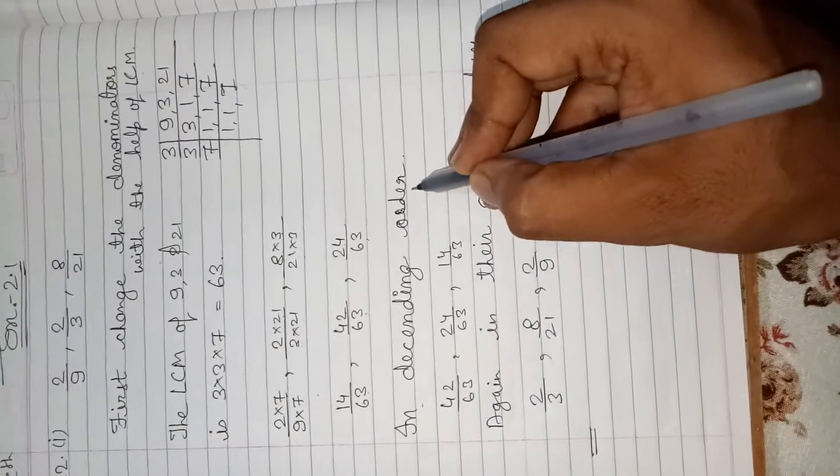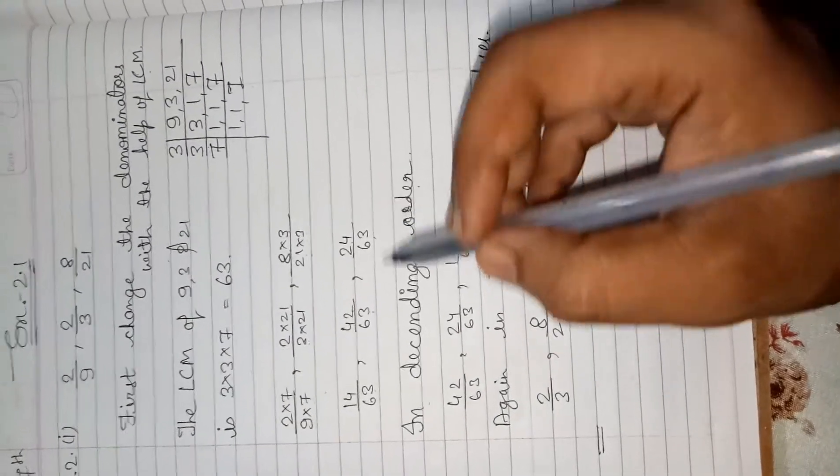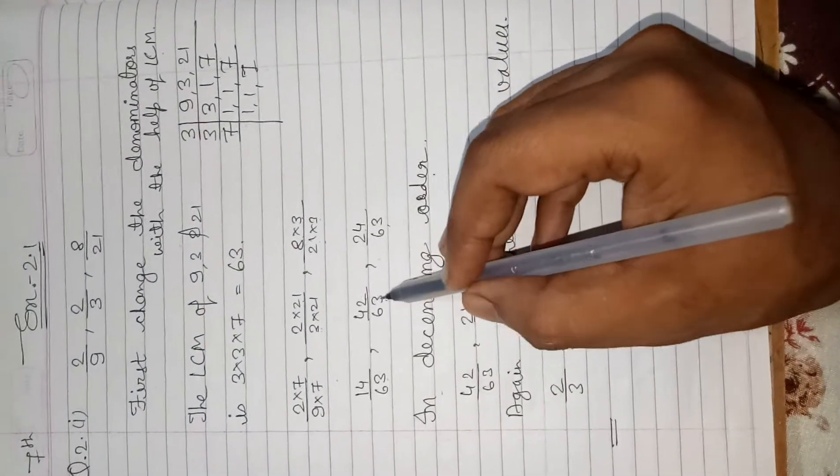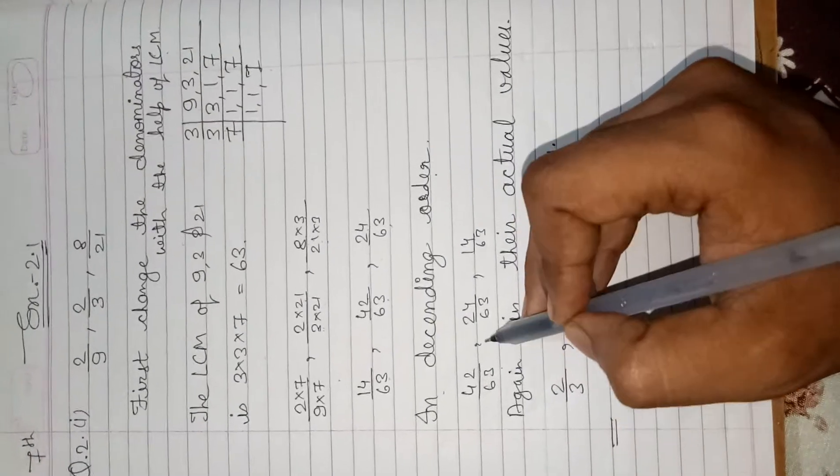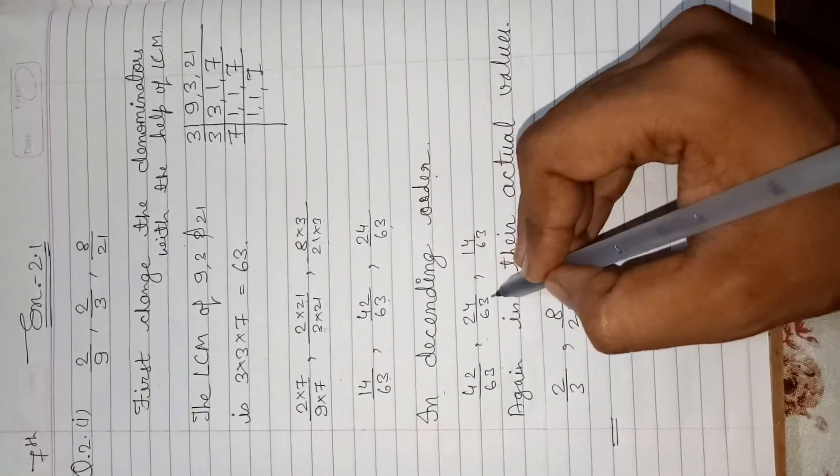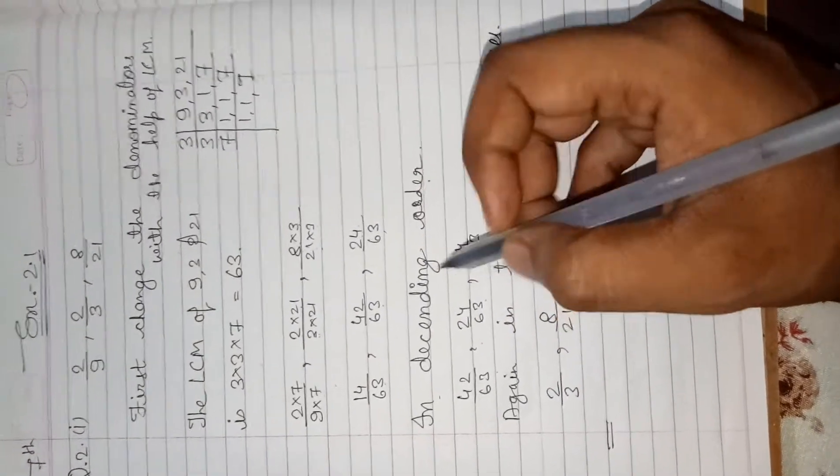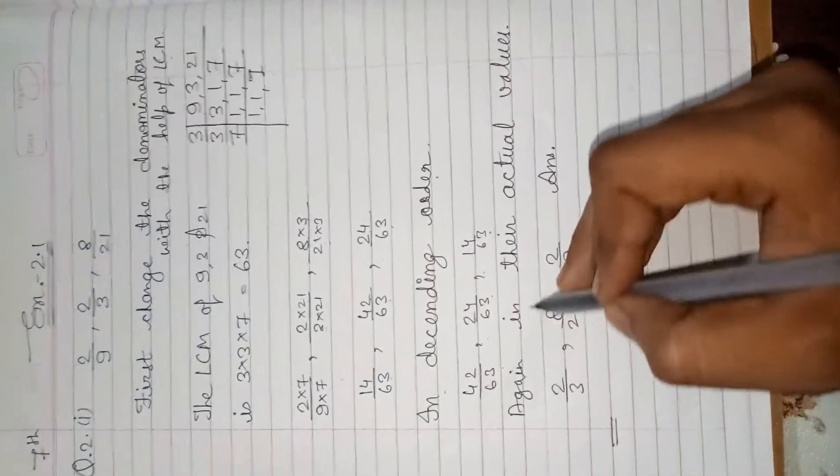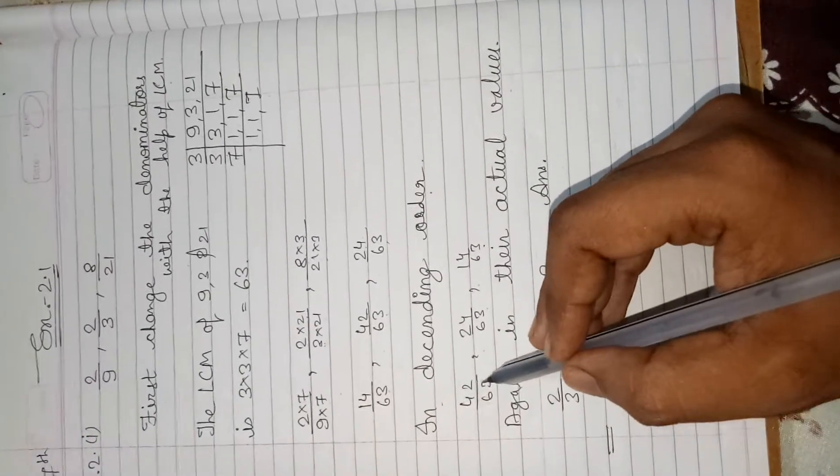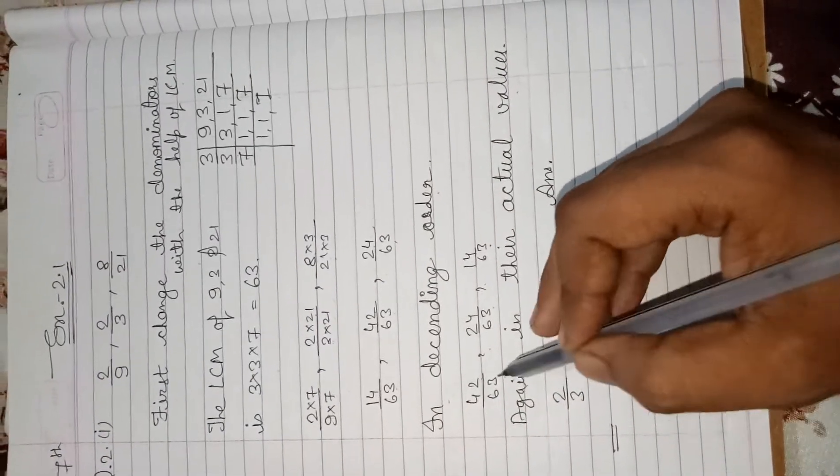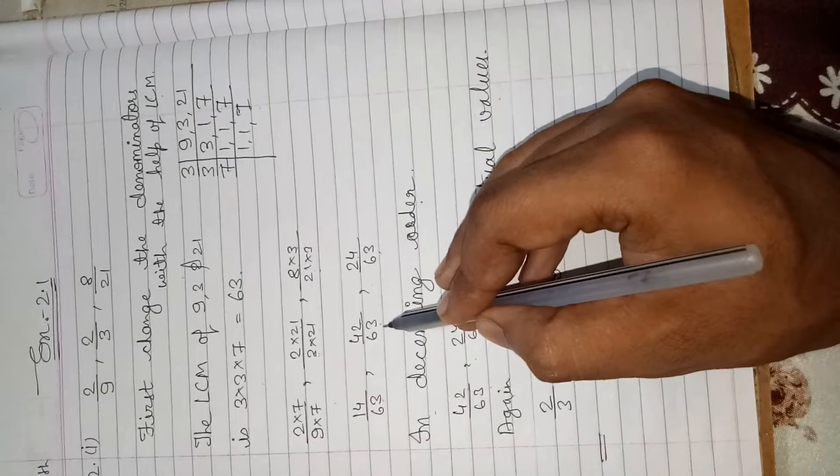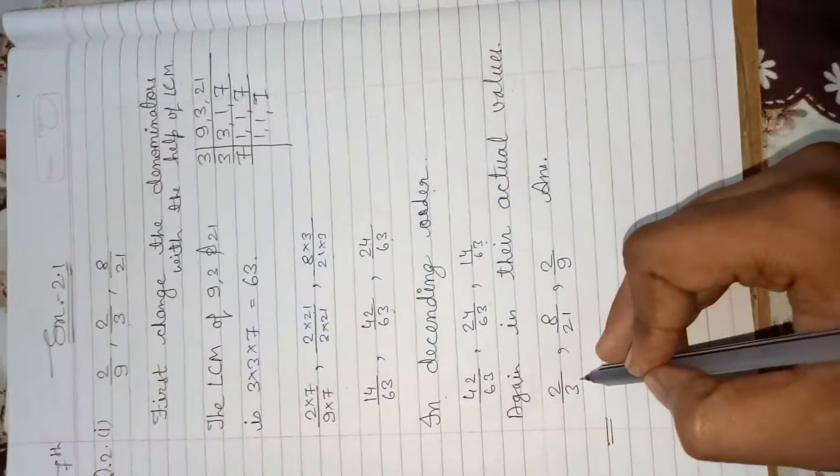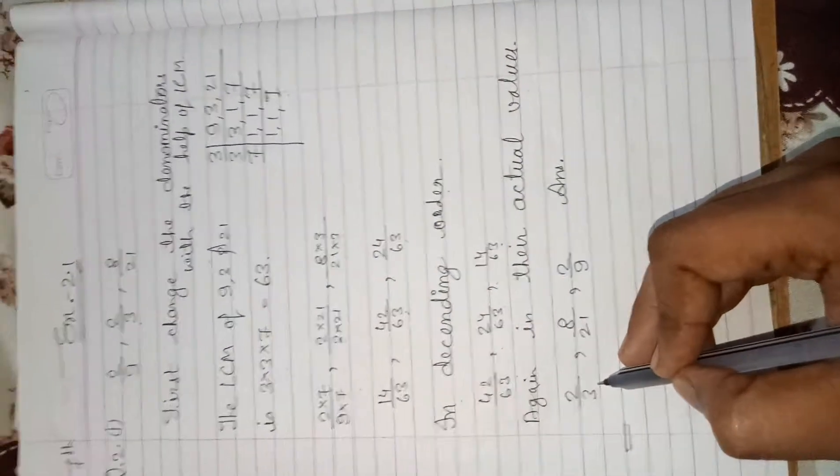Now, in descending order. First, which is the bigger? 42 upon 63 is bigger. After that, 24 upon 63. And the smaller number is 14 upon 63. But in actual, in their actual values, value of 42 upon 63 is second fraction, 2 by 3. So first fraction is 2 by 3.